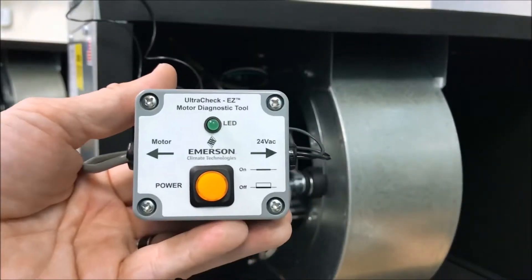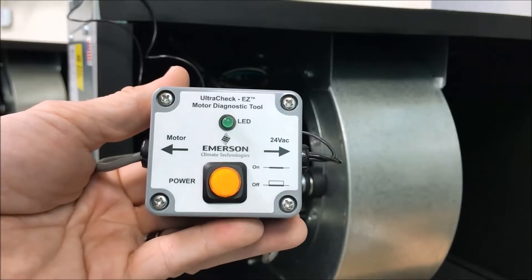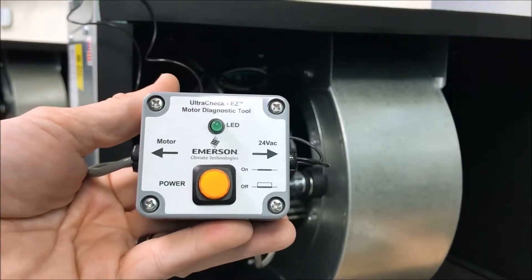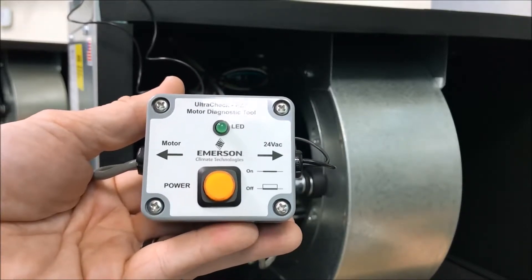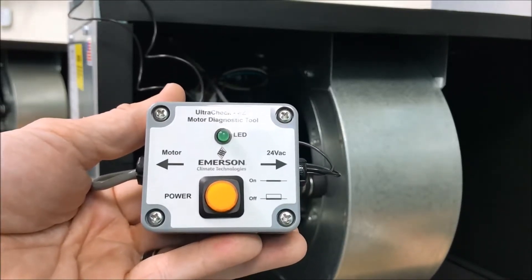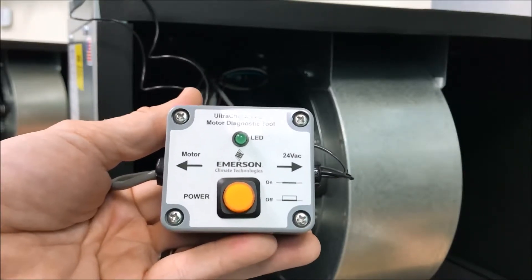The easiest way to determine if your motor is bad is by using this motor tester. This plugs right into the module on the EC motor. It has two wires that go to R and C for 24 volts and it applies 24 volts for a test spin. All you have to do is alligator clips go on R and C.